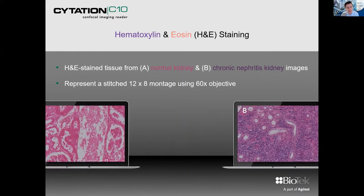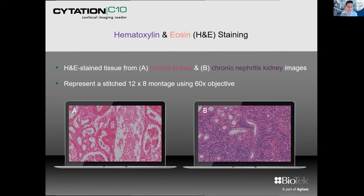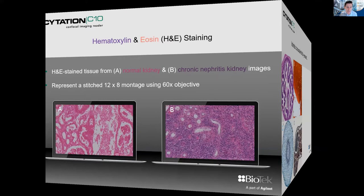H&E stains are not forgotten. As you can see here, some stitched images — a 12x8 montage using a 60x objective — give you not only a wide view of what the slide contains but also that 60x detail. This shows examples of intrinsic color that can be faithfully rendered across a lot of different sample types.